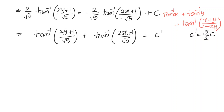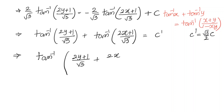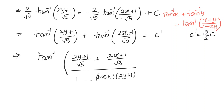So we write tan⁻¹ of [(2y+1)/√3 + (2x+1)/√3] divided by [1 minus (2x+1)/√3 · (2y+1)/3] equals c′. Applying tan on both sides we have (2x + 1 + 2y + 1)/√3 in the numerator.